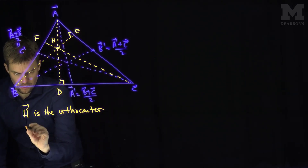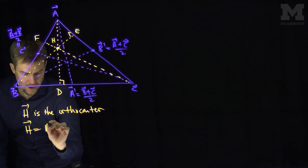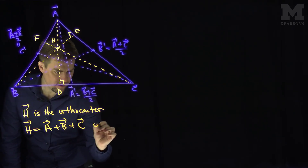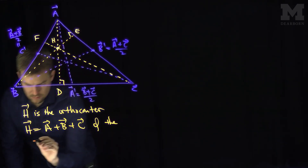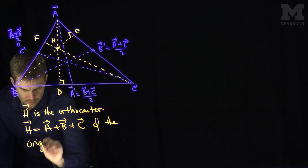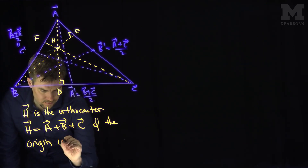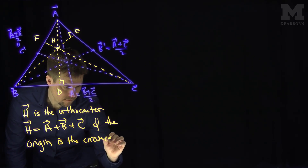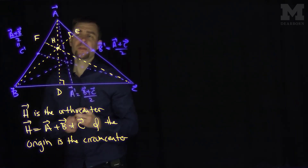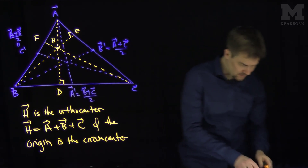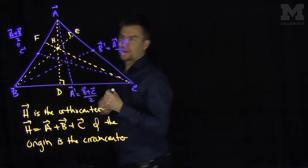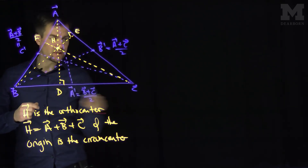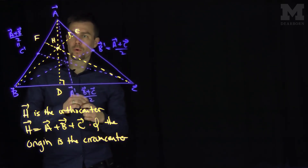We saw in a previous video that H has the vector form A + B + C, if the origin is the circumcenter. Now I'm going to find three more points. These three new points are going to be the midpoints from the vertices of the triangle to the orthocenter.